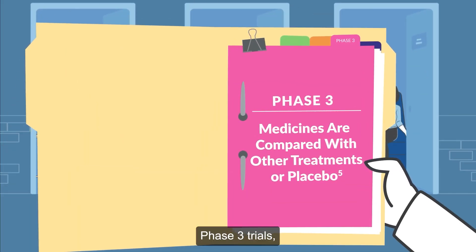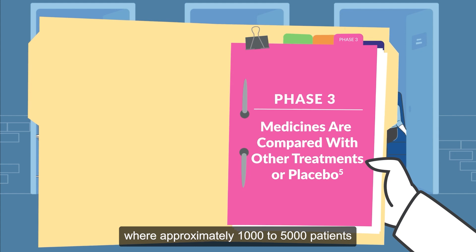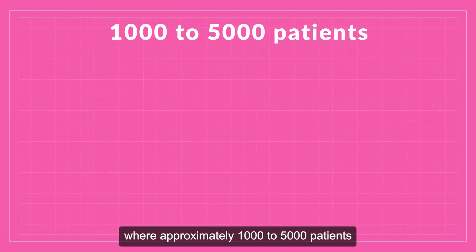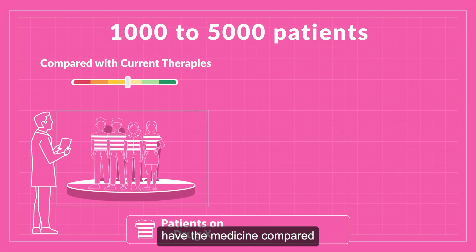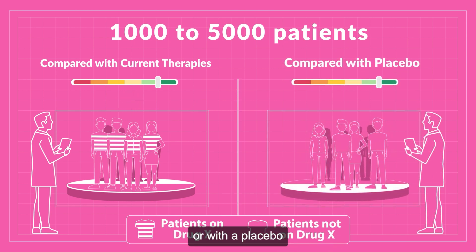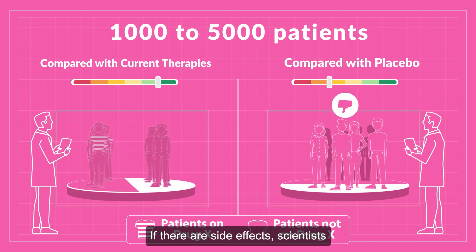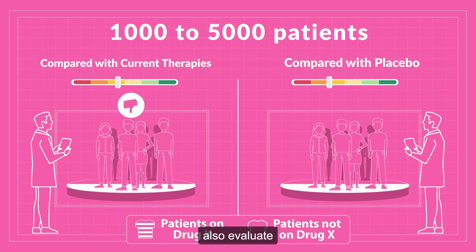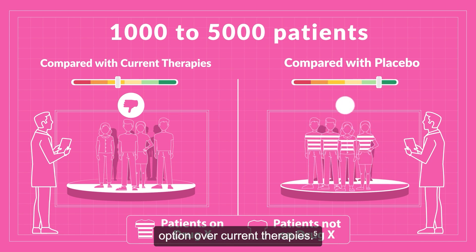Phase three trials, where approximately 1,000 to 5,000 patients participate, have the medicine compared with currently available treatments or with a placebo if there are no treatments for the disease. If there are side effects, scientists also evaluate if the new drug is the best possible option over current therapies.